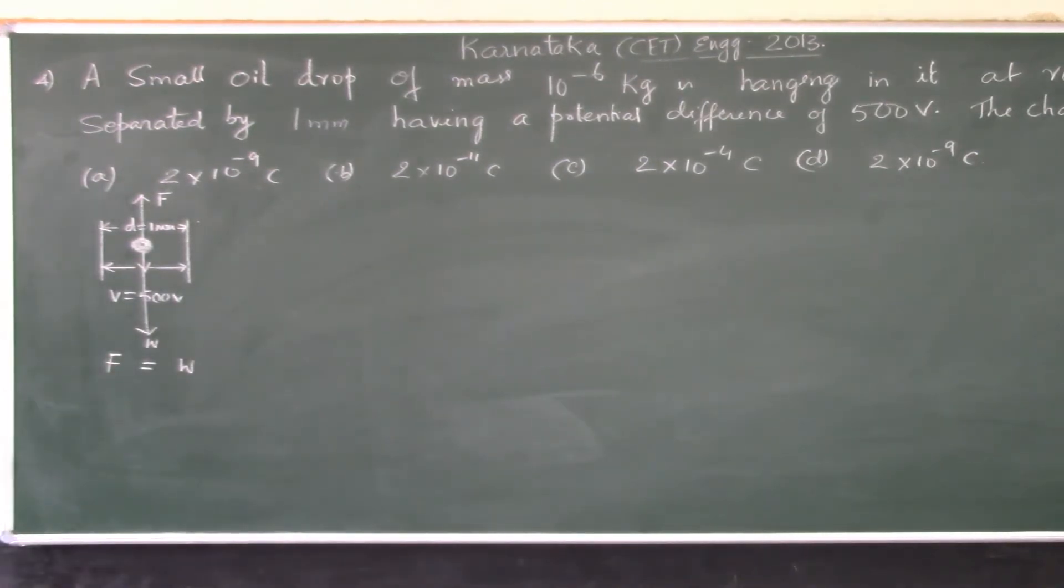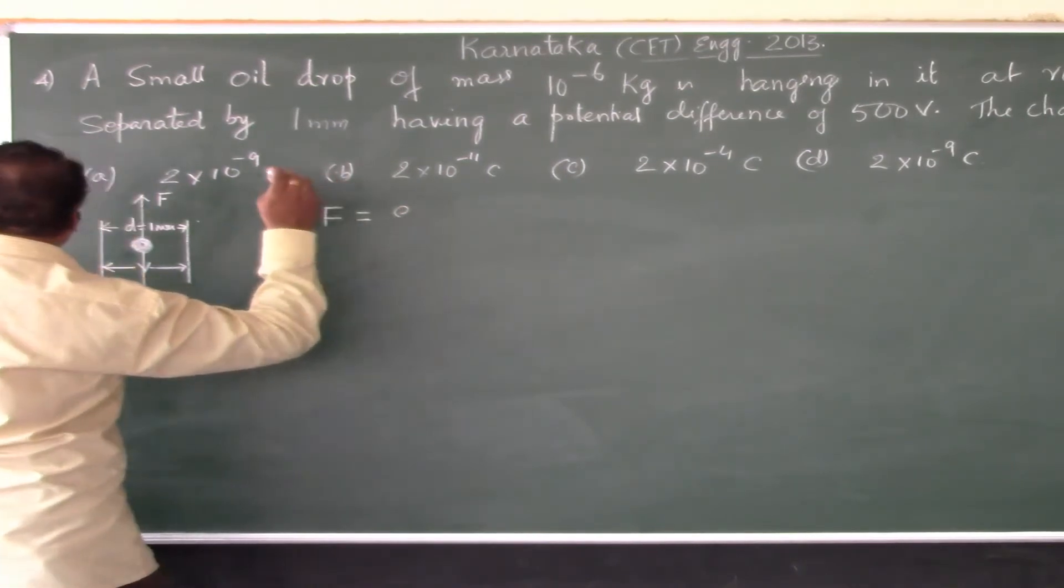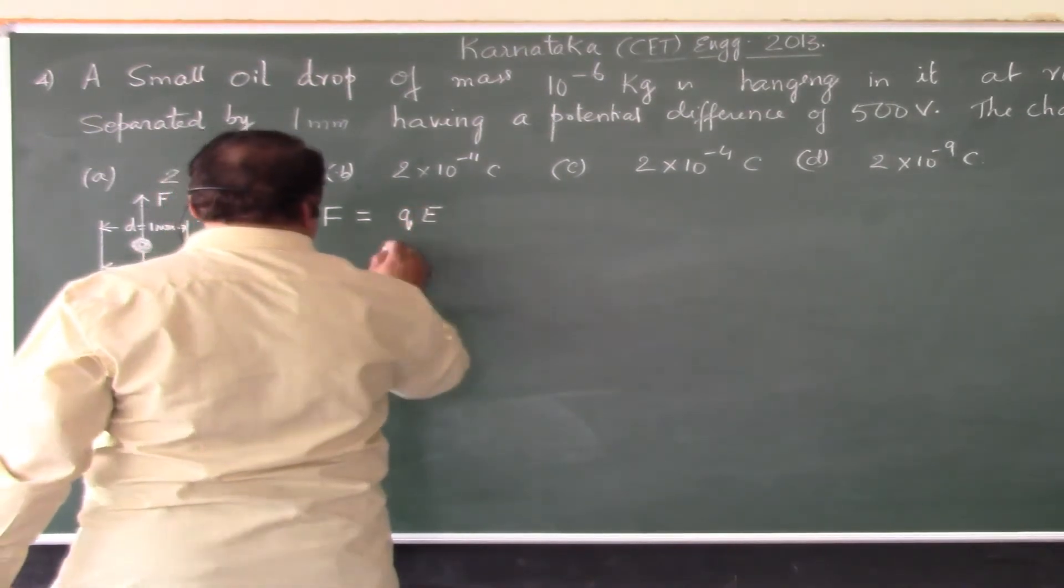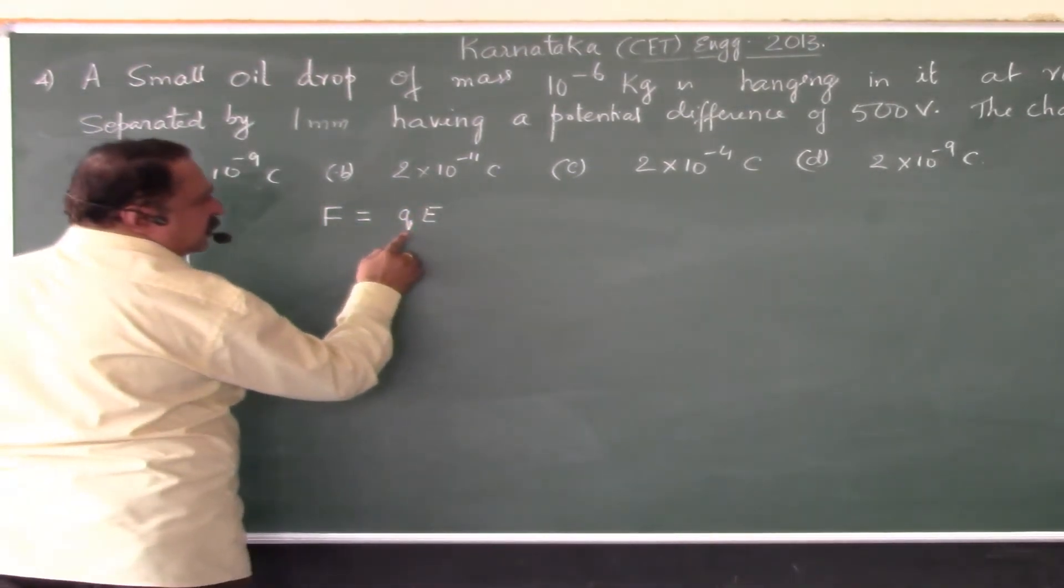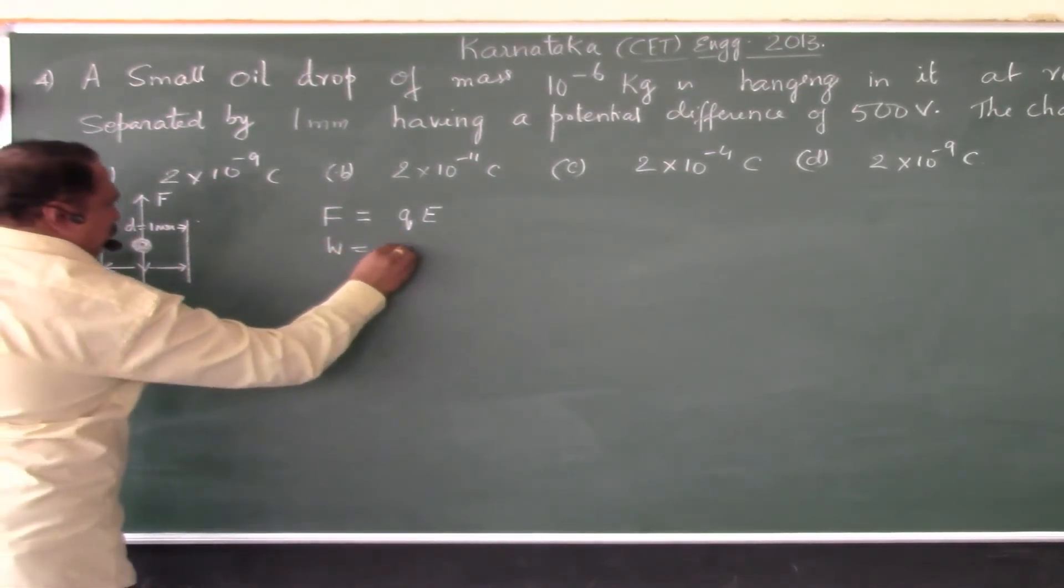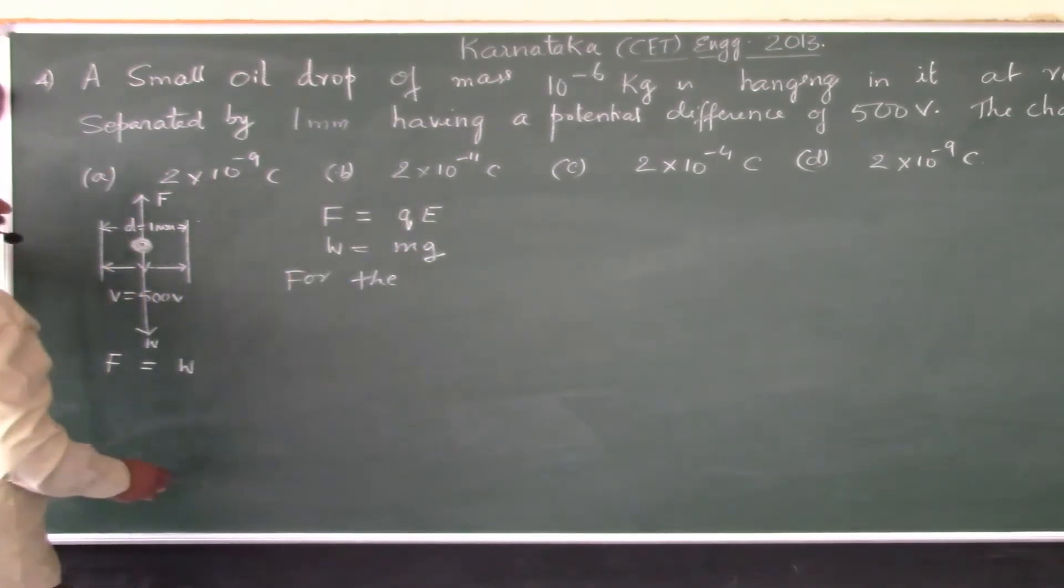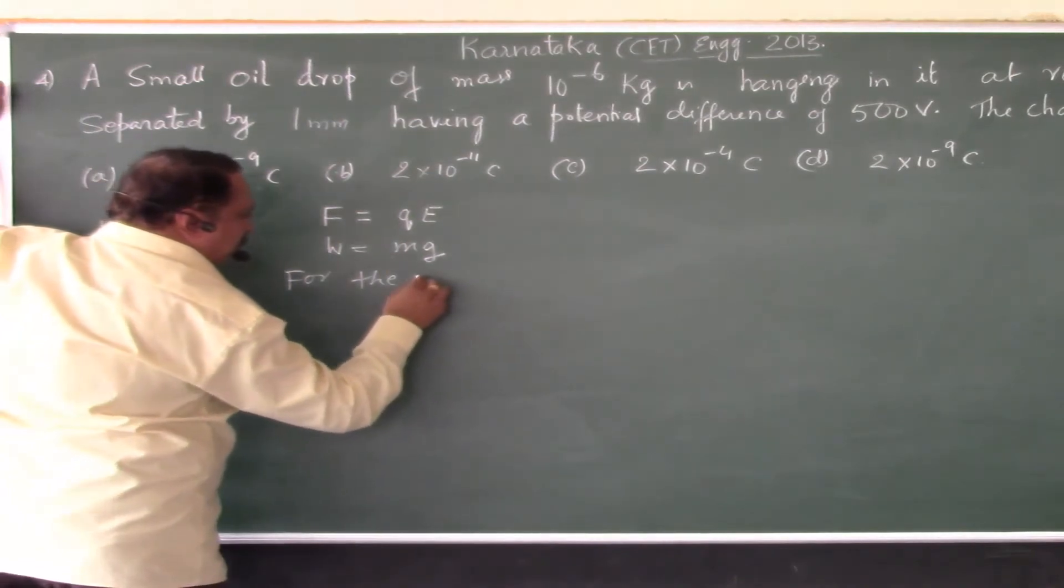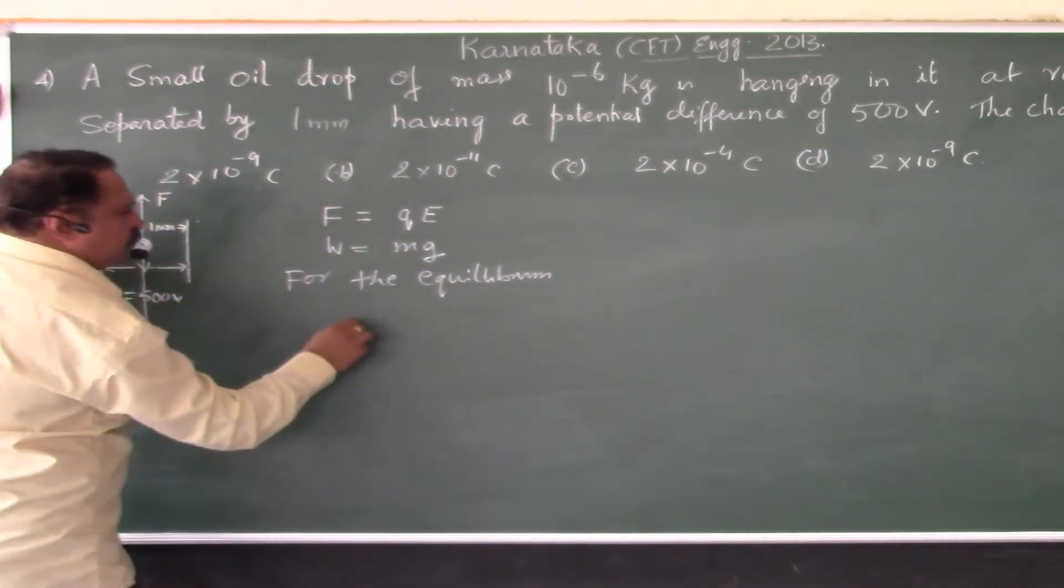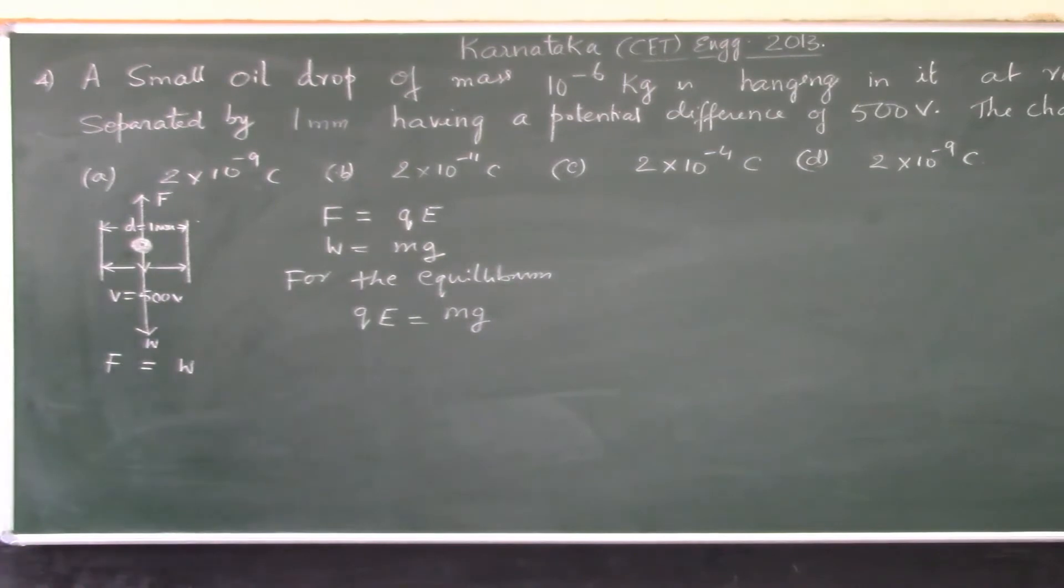F is the force acting on a charge particle and F is equal to Q, where Q is the charge, into electric field strength. And what is W? W is equal to mg for the resting position of the oil drop or for the equilibrium. What should be equal? QE should be equal to mg.